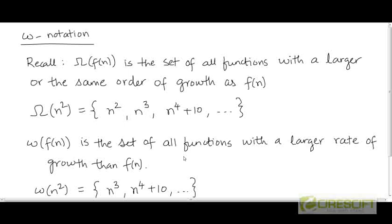We now come to the fifth asymptotic notation, which is the little omega notation. The little omega notation is analogous to the big omega notation, just as the little o notation was analogous to the big o notation. And like the little o notation, the little omega notation is not going to be used very frequently.